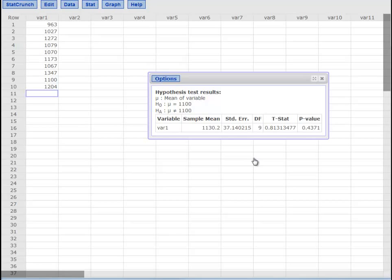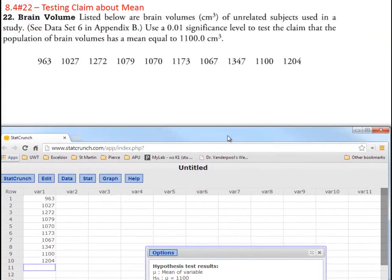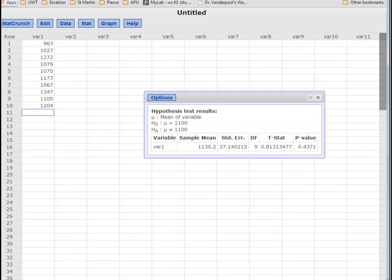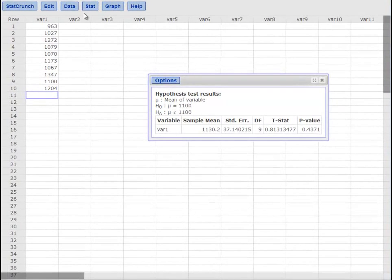We would list our test statistic as t equals 0.813. We would list the p value and then we would obviously fail to reject and then say that the data supports the claim because in this case the claim is that it's equal.